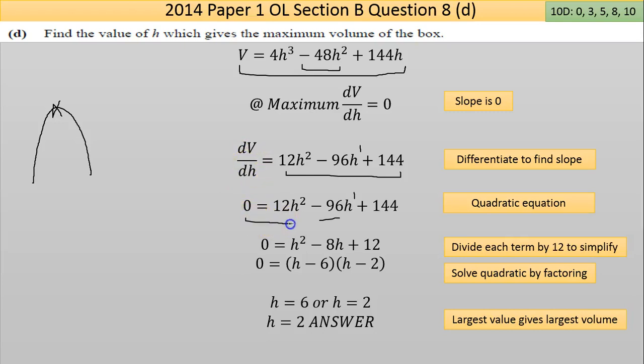Now I have an equation of 1 unknown, a quadratic equation, so I have to solve it. What I've done here is simplified it by dividing all the way across by 12. 12 into 12 goes once, minus 96 goes minus 8 times, 12 into 144 goes 12 times. That's the quadratic and I can solve it using the factoring method. I'm looking for what two numbers multiply to give 12 and add to give minus 8.